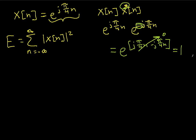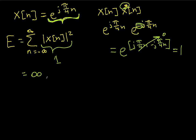So what this says is the magnitude of this complex exponential is one. You can also show this another way: e to the j pi over 4n equals cosine(pi/4·n) plus j sine(pi/4·n), and squaring confirms the magnitude is indeed one. What that means for the energy computation is every term in the sum is going to be one, and if I sum from minus infinity to infinity, I'll have an infinite number of ones, so the answer is going to be infinite.